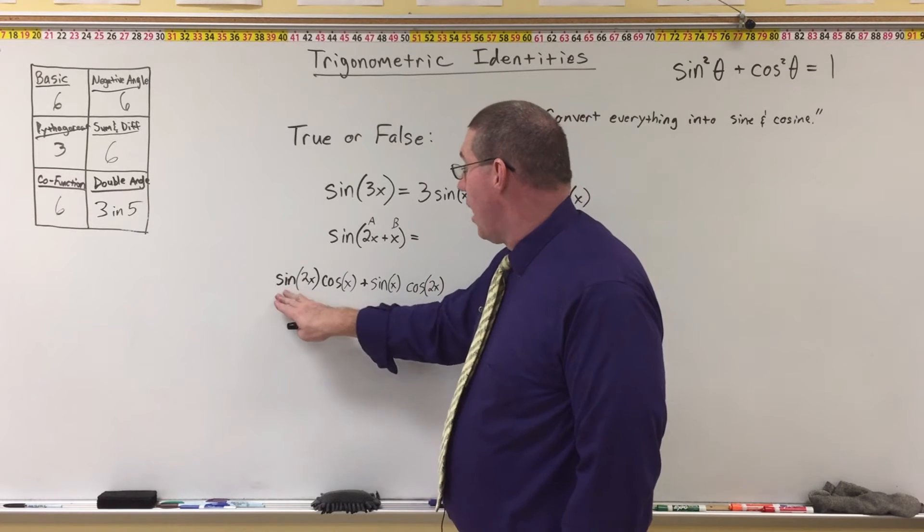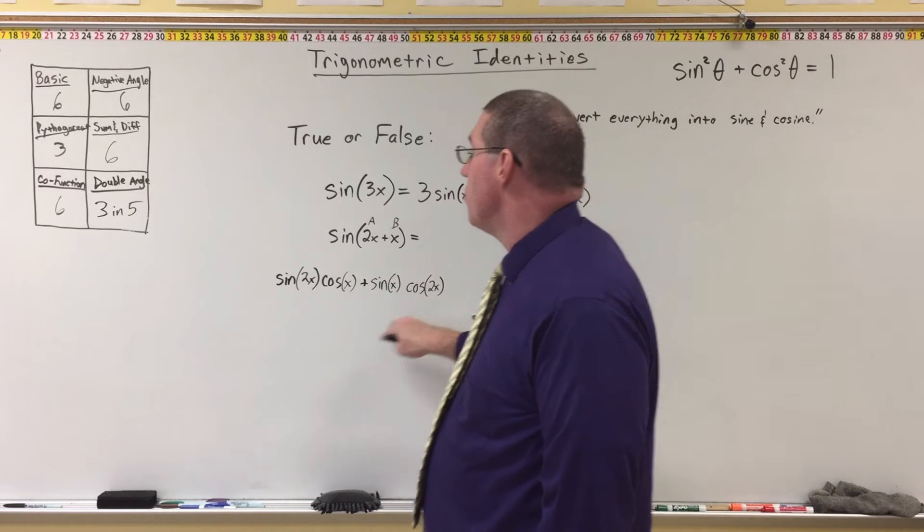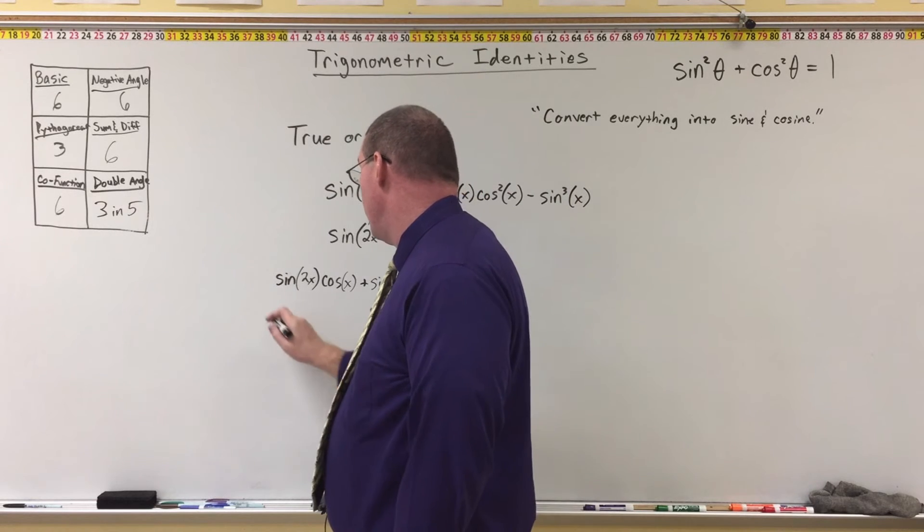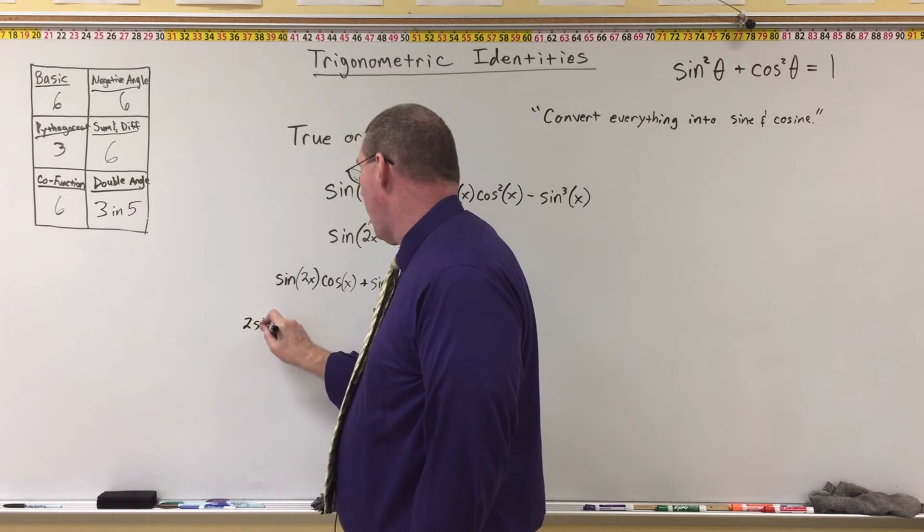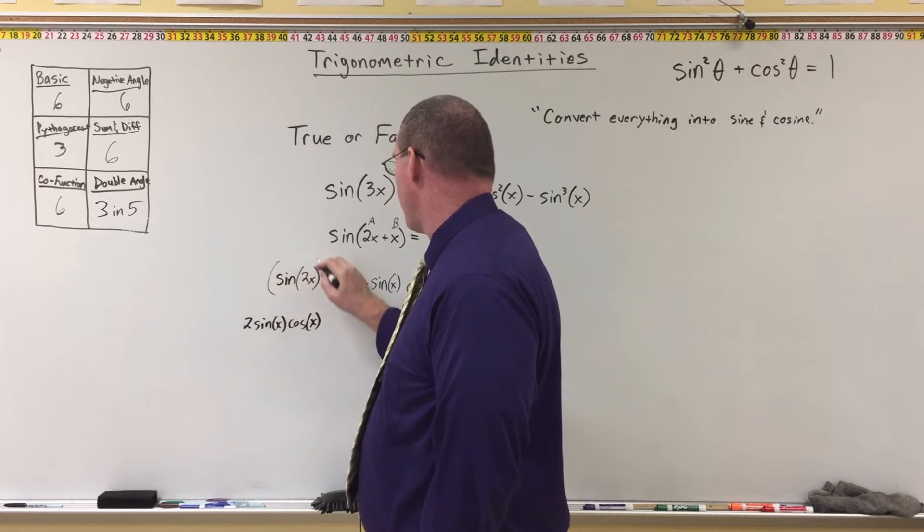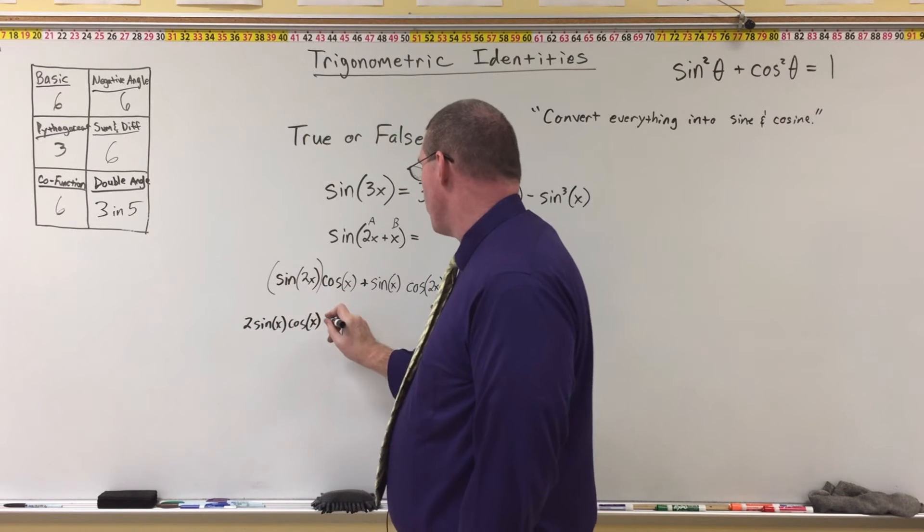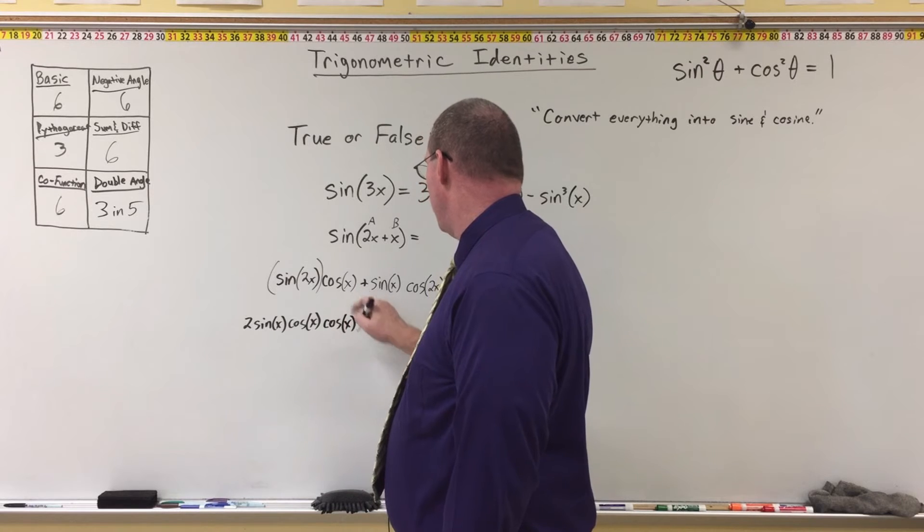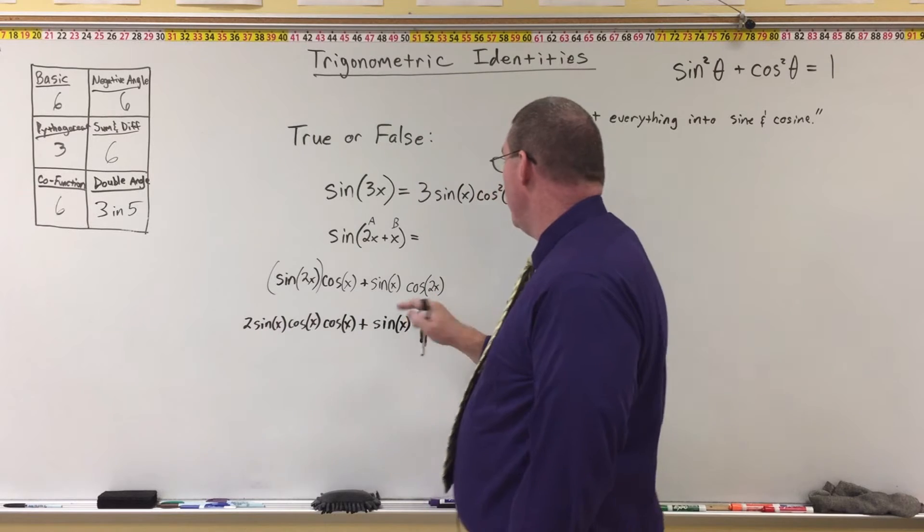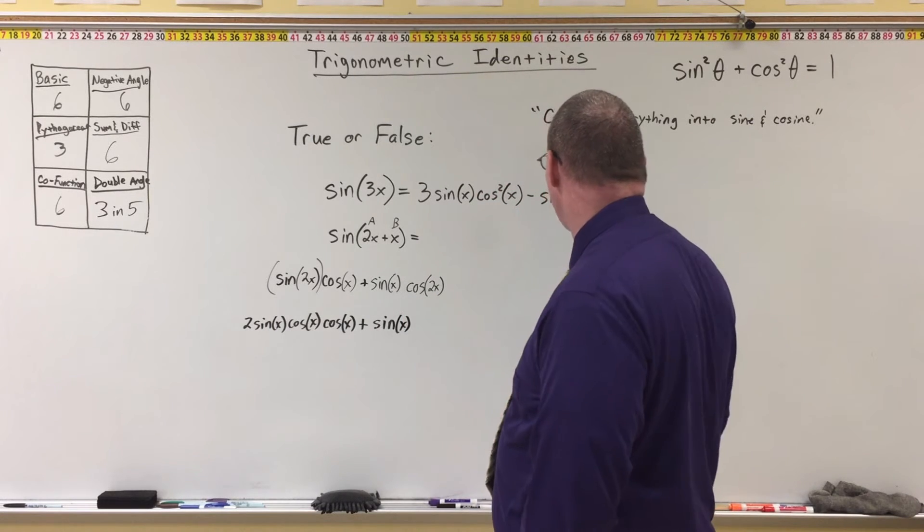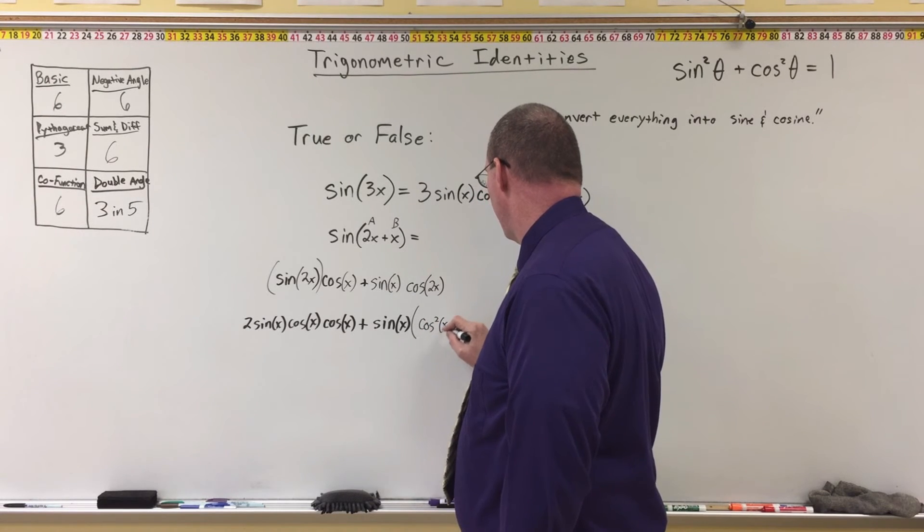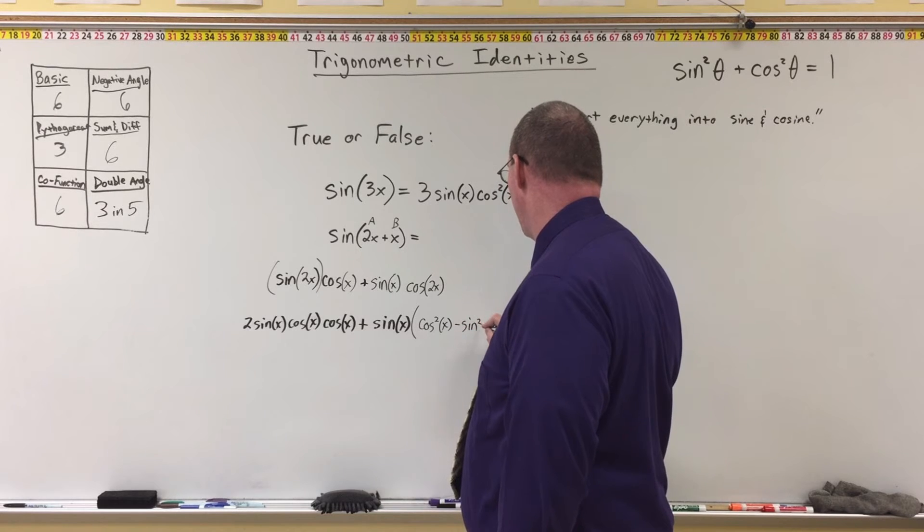All right. Now, where you see the sine of 2x and the cosine of 2x, I can use my double angle formulas now to replace them. We know that sine of 2x is the same thing as two sine of x times cosine of x. That's for this right here. And we're going to multiply that by cosine of x plus sine of x.